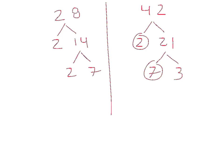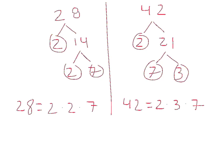I circle all of my prime factors, and I want to rewrite them underneath. 28 is equal to 2 times 2 times 7, and 42 is equal to 2 times 3 times 7. I want to circle all the common factors, so I see that 28 has a 2 and a 7, and 42 also has a 2 and a 7.